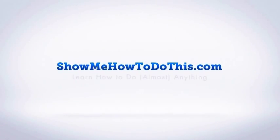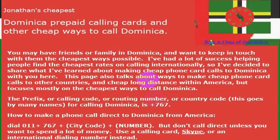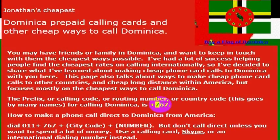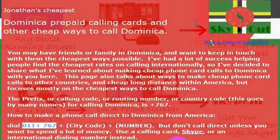To call Dominica from a phone in the United States that is enabled to make international phone calls, you simply need to know the international calling code for the country, which in this case is 767. So if you wanted to make a phone call to Dominica, what you would do is dial 011, then 767, and then the phone number that you want to call. You would need to call from an internationally enabled phone.